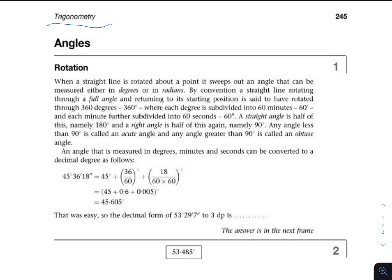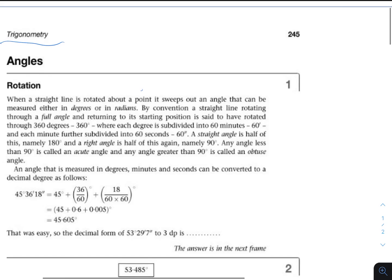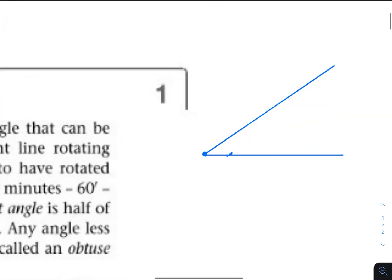Let's start with rotation. When a straight line is rotated about a point, it sweeps out an angle that can be measured either in degrees or in radians. So you've got a straight line — when it's rotated about a point, it sweeps out an angle. Moving it from one position to another around the point creates an angle that can be measured either in degrees or radians.